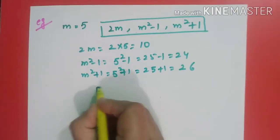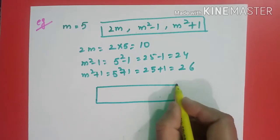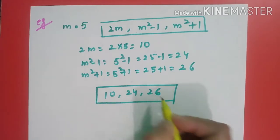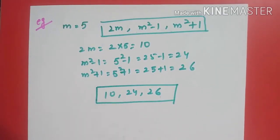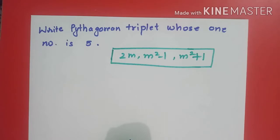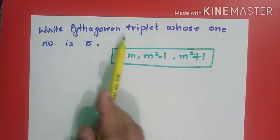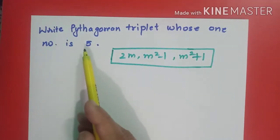So what triplet did I get? I have 10, 24 and 26. Okay students, in this way if m is given, we can find out the Pythagorean triplet. Now see another thing: write Pythagorean triplet whose one number is 5.